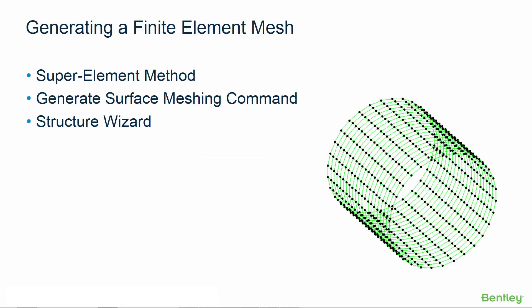Let's now discuss the different tools available to achieve a finite element mesh in STAAD Pro Connect Edition. In the previous video, you learned how to manually create individual elements at a time by drawing them from node to node — what we might call the brute force method. Fortunately, STAAD Pro offers many alternative methods that are much more convenient and less labor intensive. In this video, we're going to explore three different commands: the super element method, the generate surface meshing command, and the structure wizard.